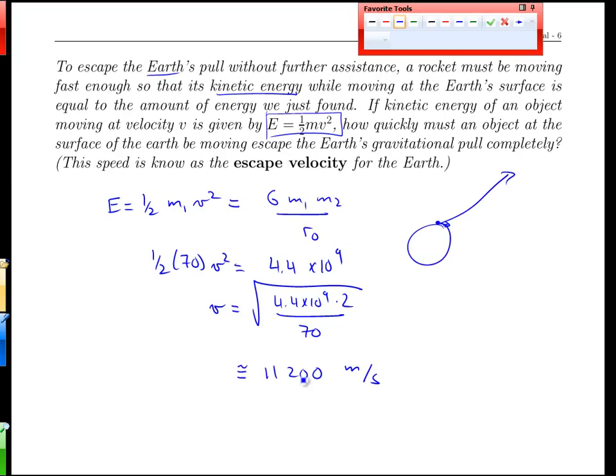Okay, this is a real number that we might get some intuition about. This is the number, or the velocity, at which we'd have to be moving to have enough energy to then shoot off and escape the gravitational pull of the earth completely. This is 11 kilometers per second.